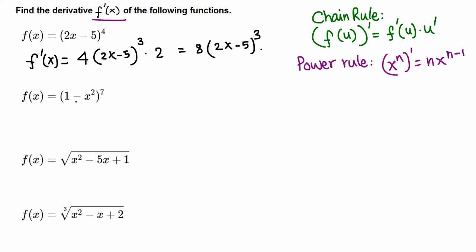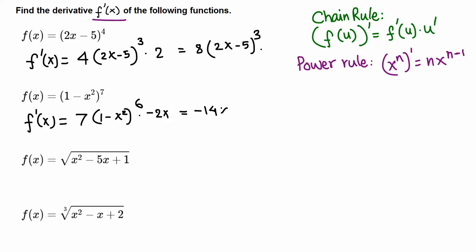Using the chain rule with the power rule: the derivative of something raised to 7 gives us 7 times that something, left alone, raised to 6. That something is (1 - x²). Then we multiply by the derivative of the inner function: derivative of 1 is 0, minus derivative of x² which is 2x, giving us negative 2x. Simplifying: 7 times negative 2x gives negative 14x in front, times (1 - x²)⁶.